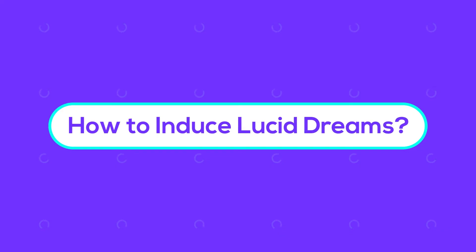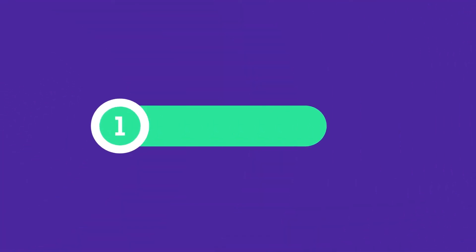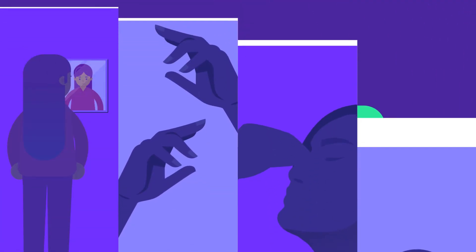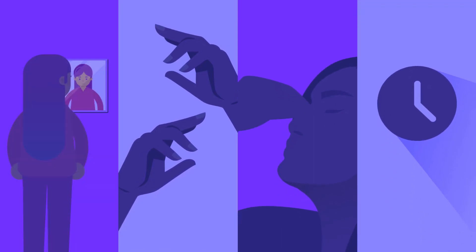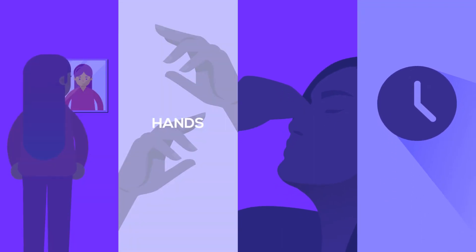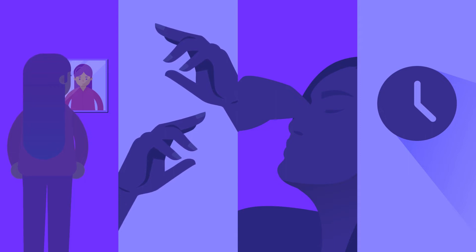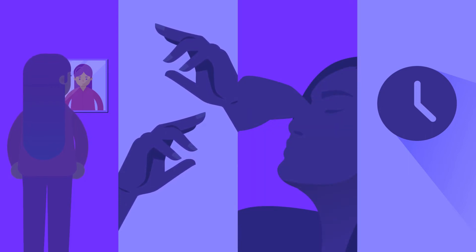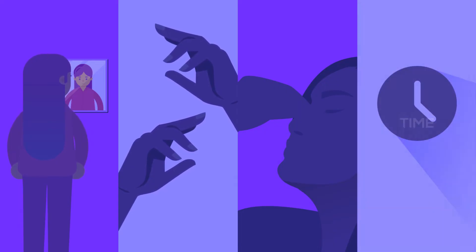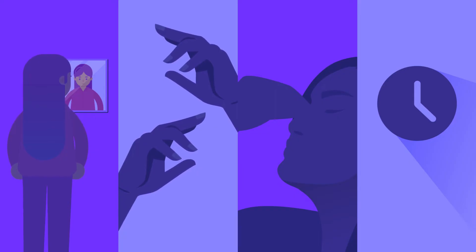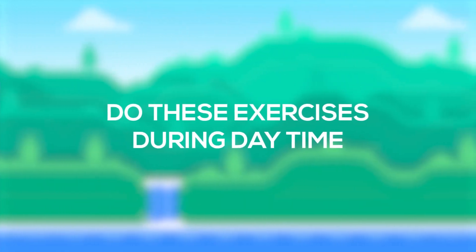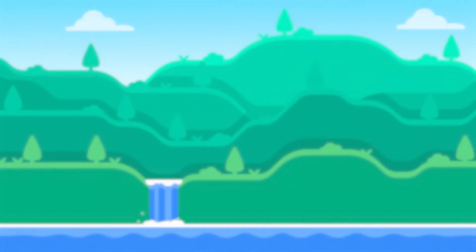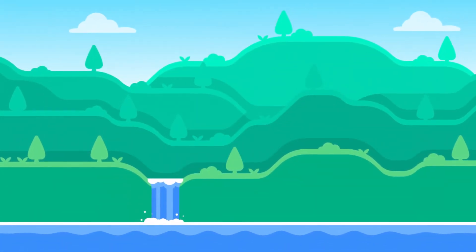How to induce lucid dreams? Perform reality testing. 1. Check mirrors and see if the reflection is normal. 2. Look at your own hands and see if they appear normal. 3. Pinch your nose and try to breathe — if you can, then you are in a lucid dream. 4. Look at the clock, look away, and then look back; in a dream the time changes constantly. Do these exercises a few times during the day so the brain will learn to do reality checks during dreams.